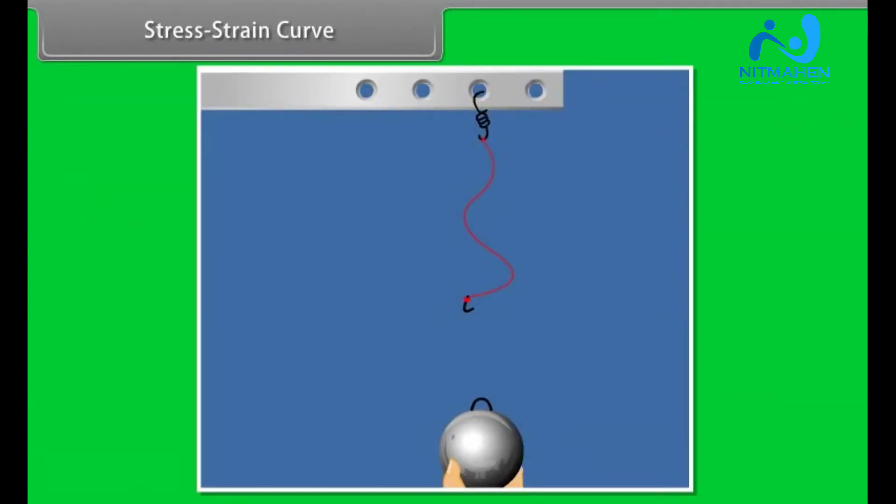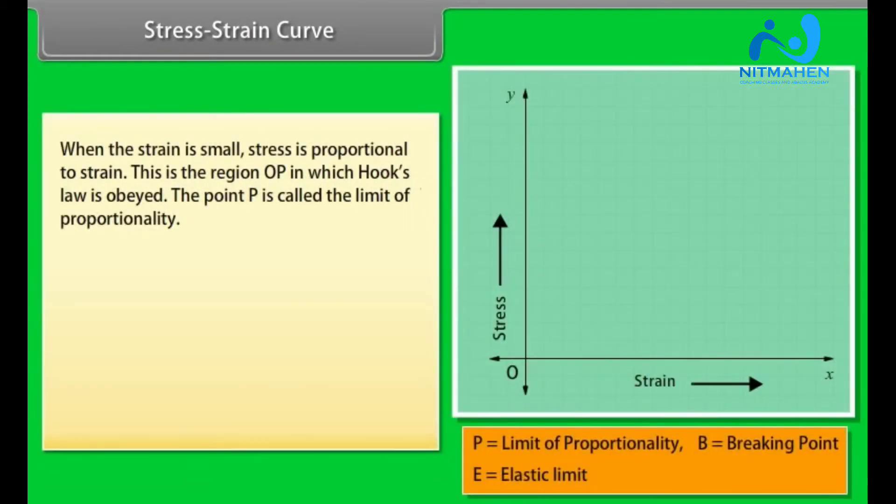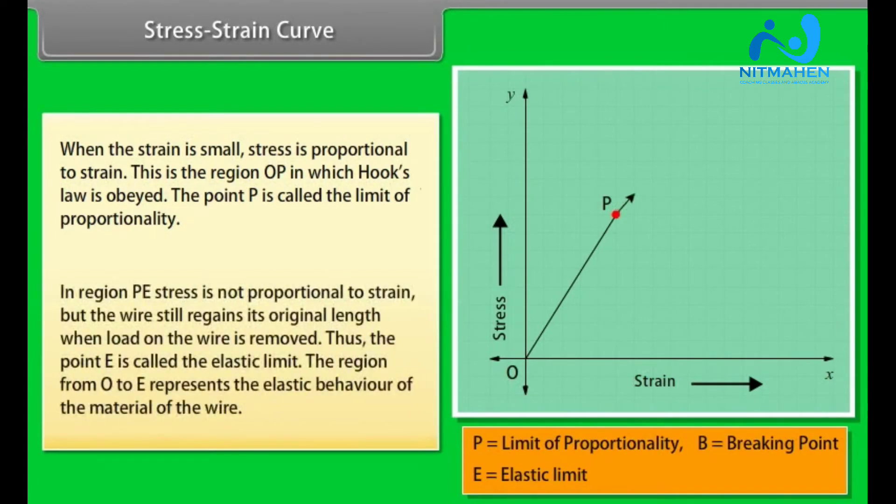Stress-strain curve. Consider a wire suspended vertically. When the wire is loaded, a stress is developed. On loading, the wire increases in length and thus strain is developed. From the curve we note that when the strain is small, stress is proportional to strain. This is the region OP in which Hooke's law is obeyed. The point P is called the limit of proportionality. In region PE, stress is not proportional to strain but the wire still regains its original length when load on the wire is removed. The point E is called the elastic limit.